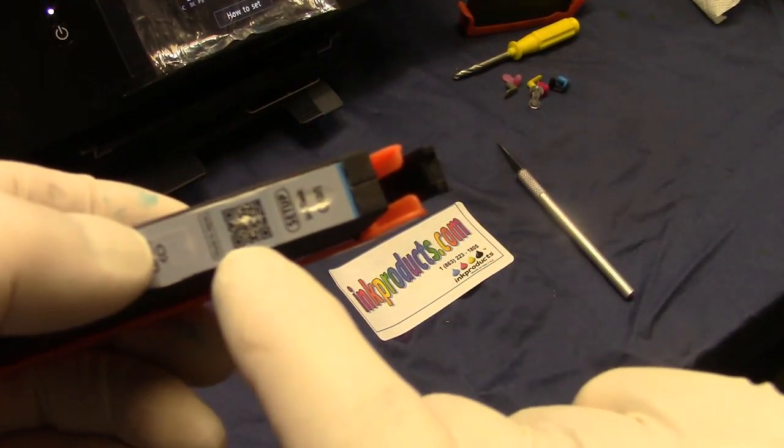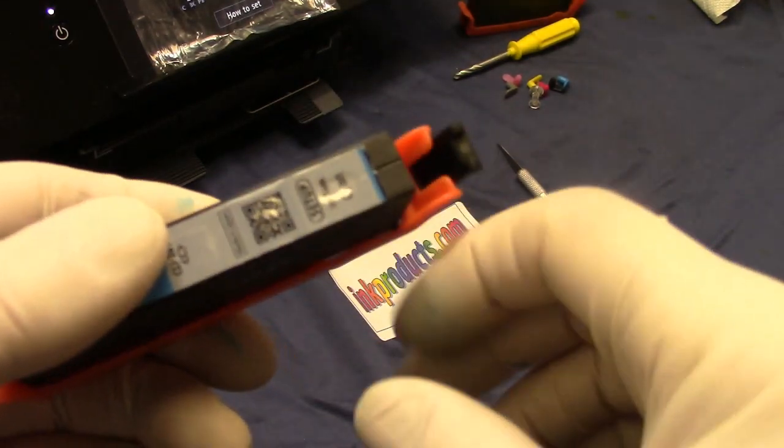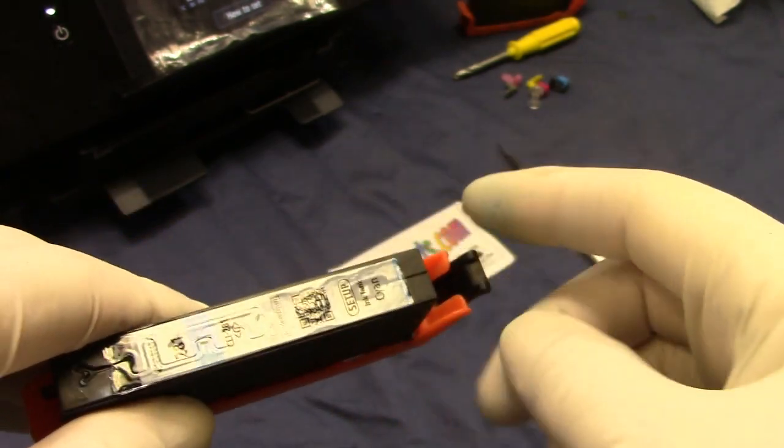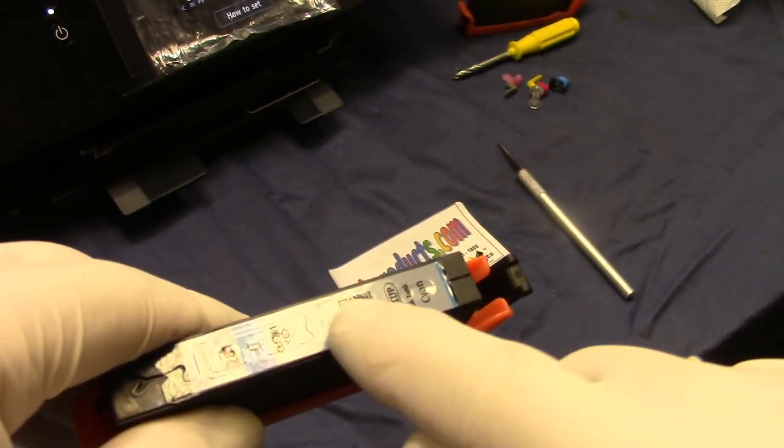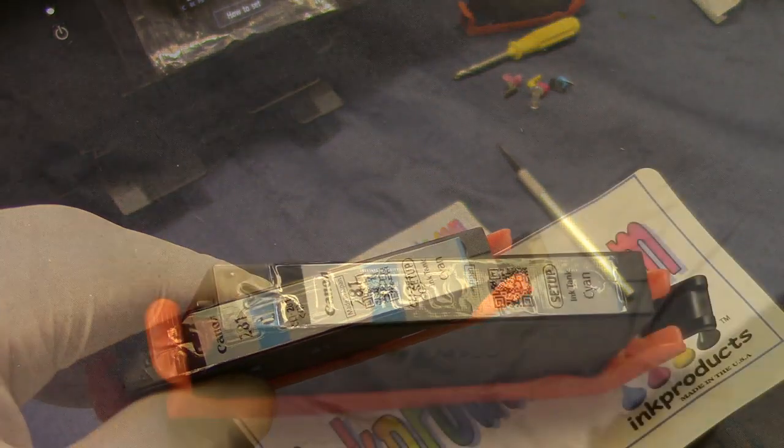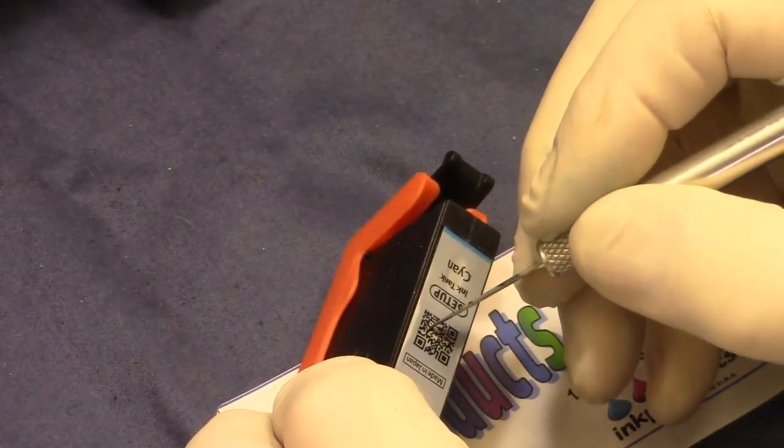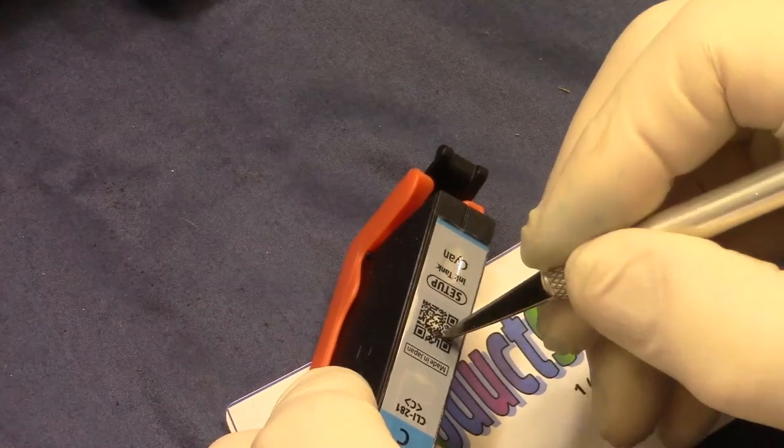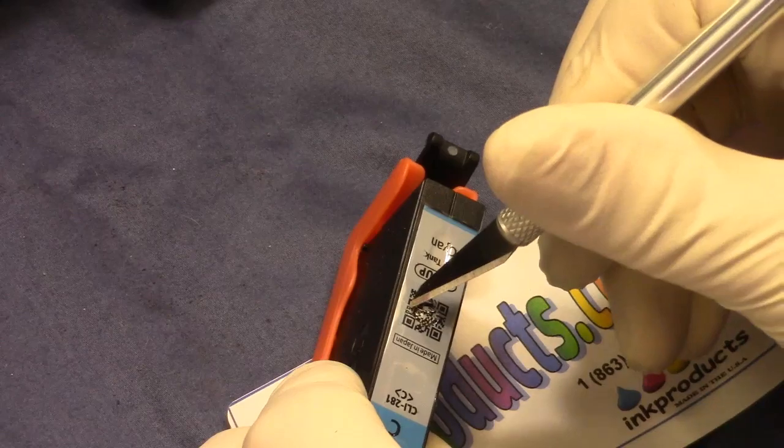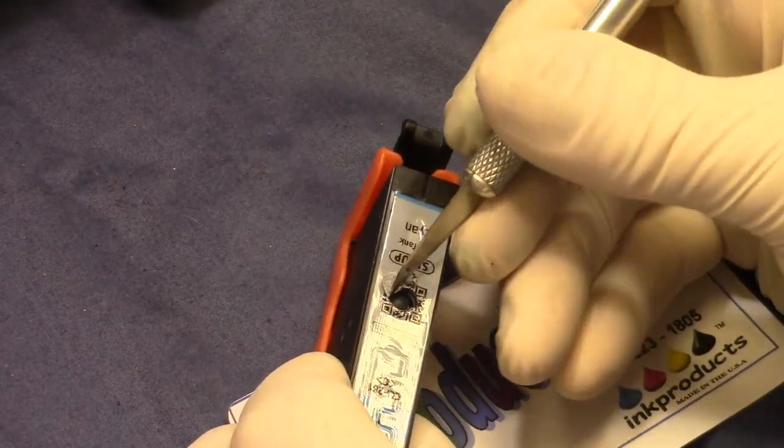The sealing ball is right under this little square blacked out area. You don't have to take the whole label off - that's very difficult anyway. Using the exacto knife, I'm going around in a circle and you can feel that little ball underneath. That exposes it right there.